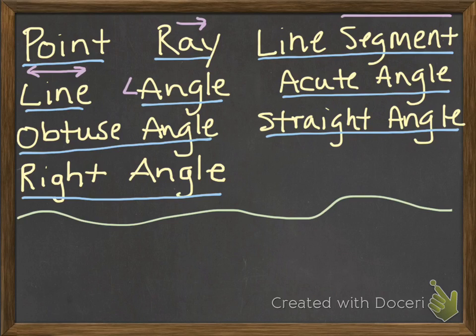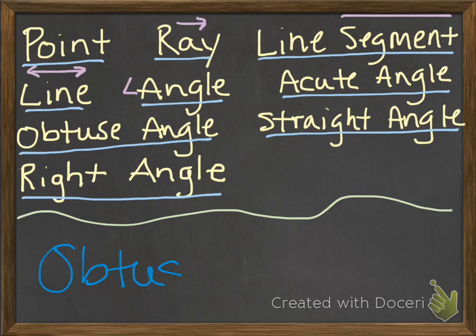All right, let's try another one: an angle that measures greater than 90 degrees and less than 180 degrees. If you said obtuse angle, you are correct — greater than 90, less than 180.